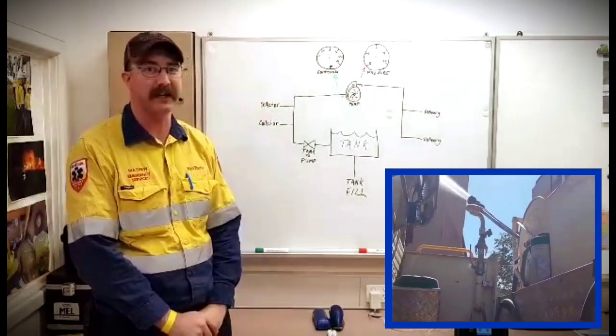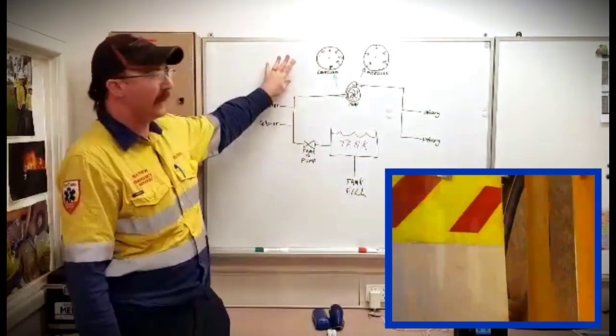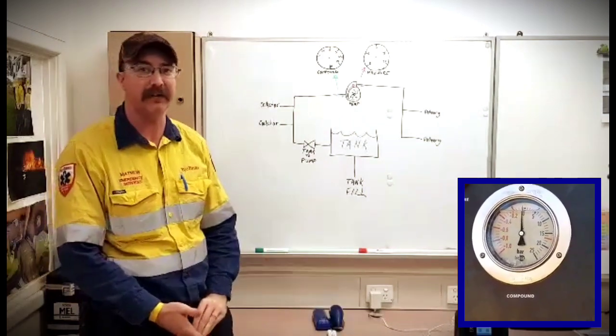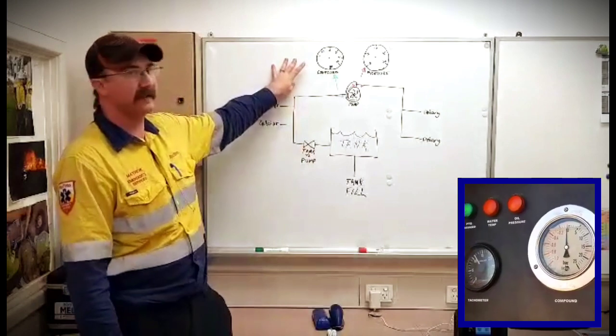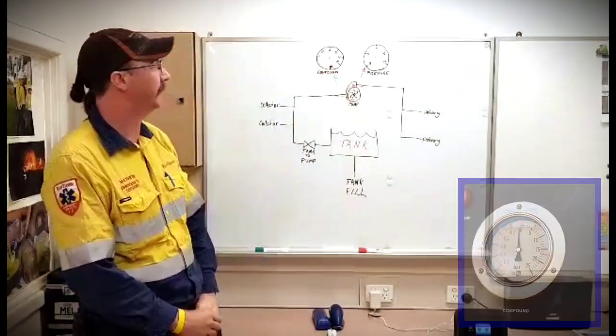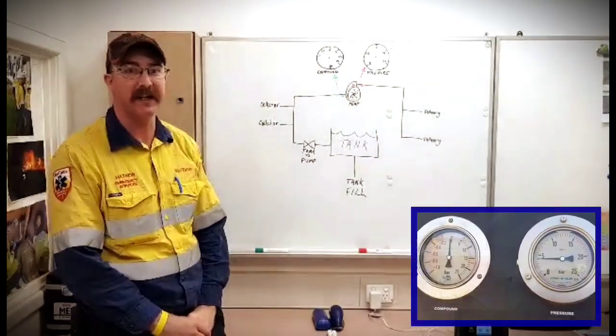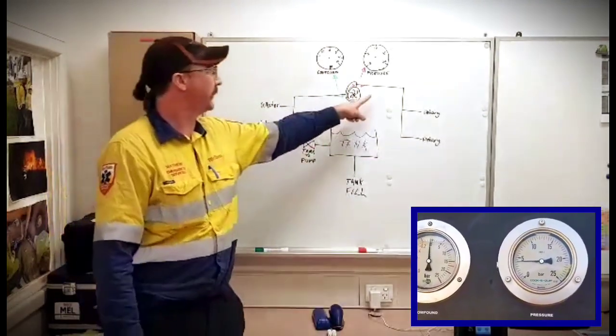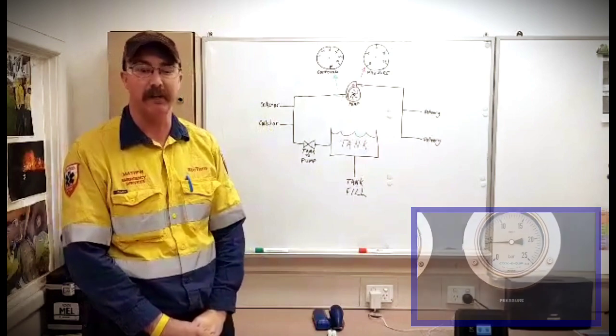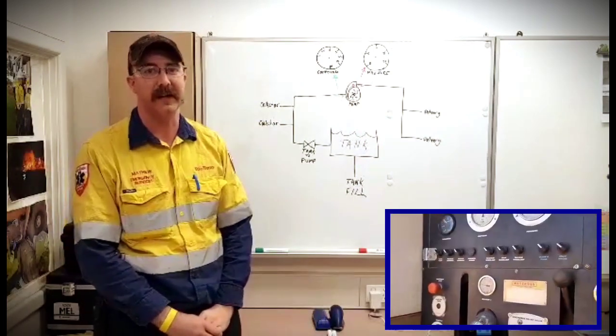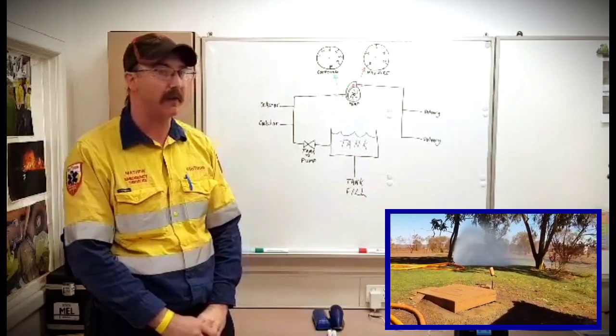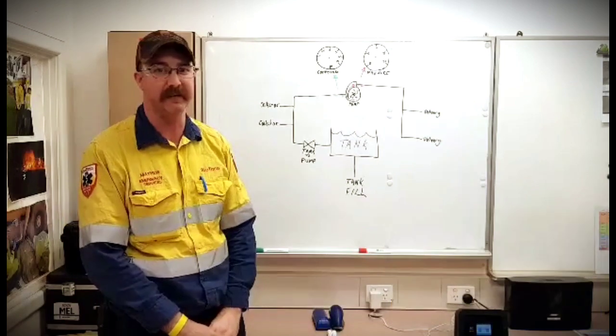So we also have a couple of pressure gauges to look at. On the inlet side of the pump we have the compound pressure gauge. This will show you what the pressure is reading on the inlet side of the pump. We'll notice it has a negative and a positive and we'll talk a little bit about that later on. The next gauge we have is our normal pressure gauge. This is telling us the pressure on the outlet side of the pump. And this is what we use to read our pressure that we're delivering out to all of our deliveries such as our hoses, monitors, all that sort of stuff. Now our operating pressure will be determined by what we're trying to achieve downstream.